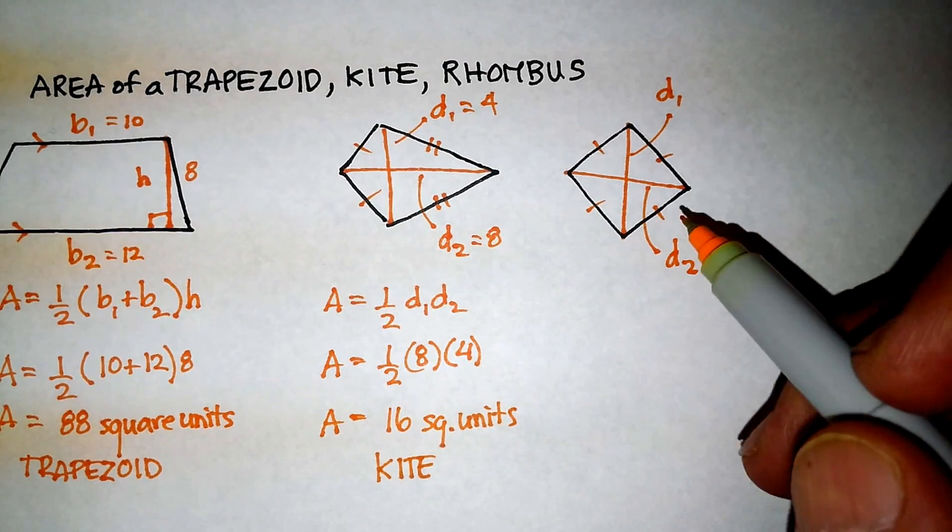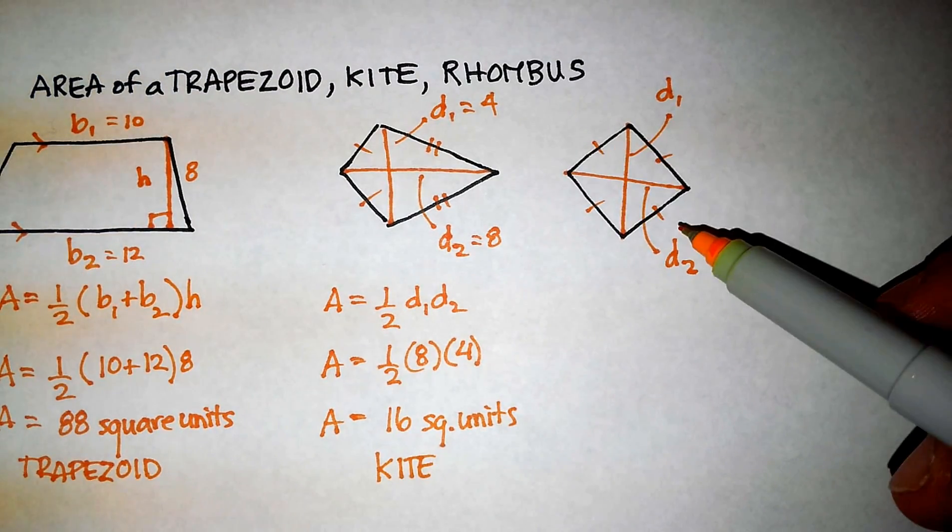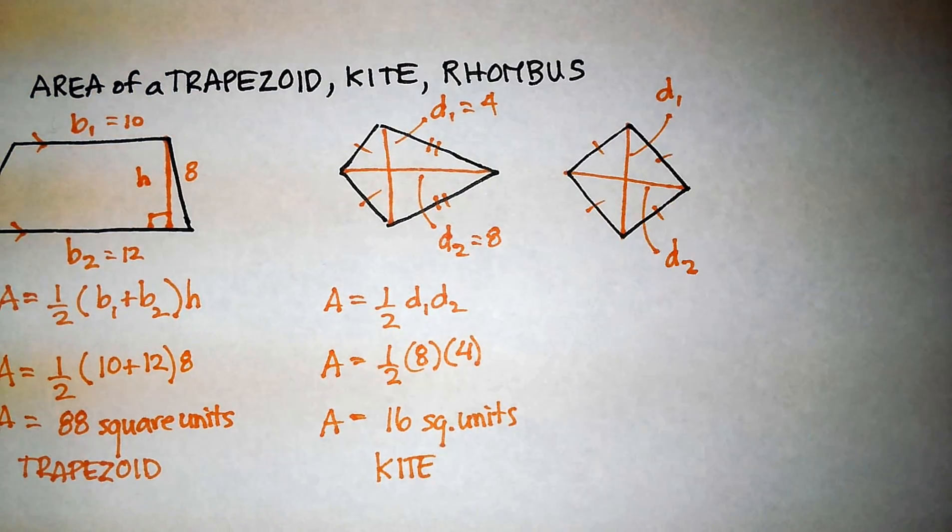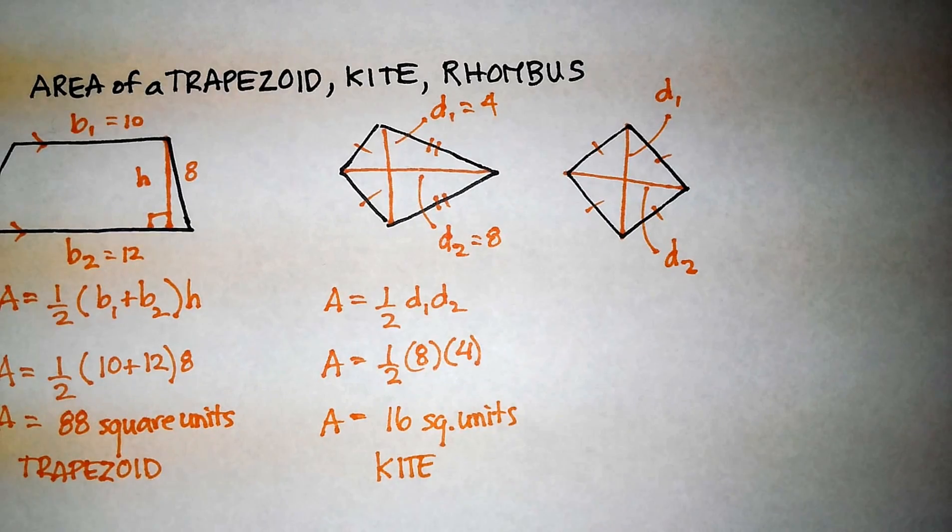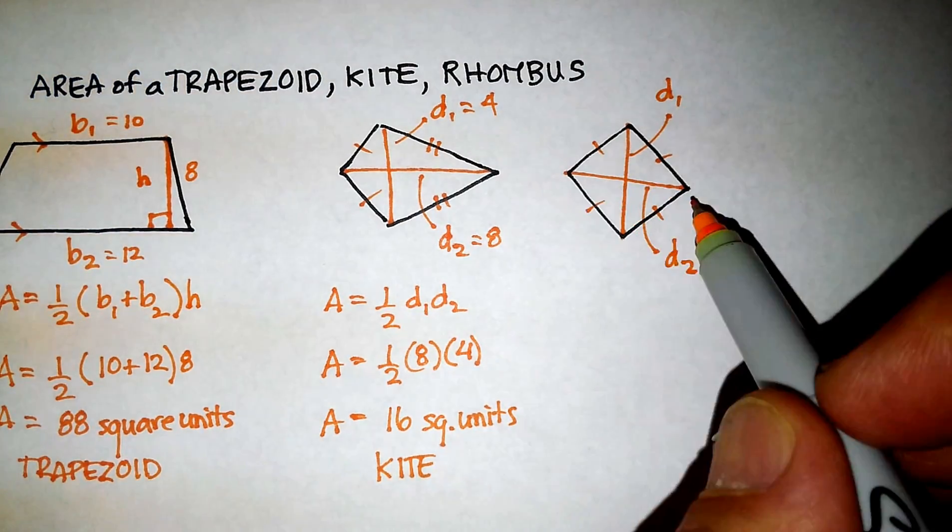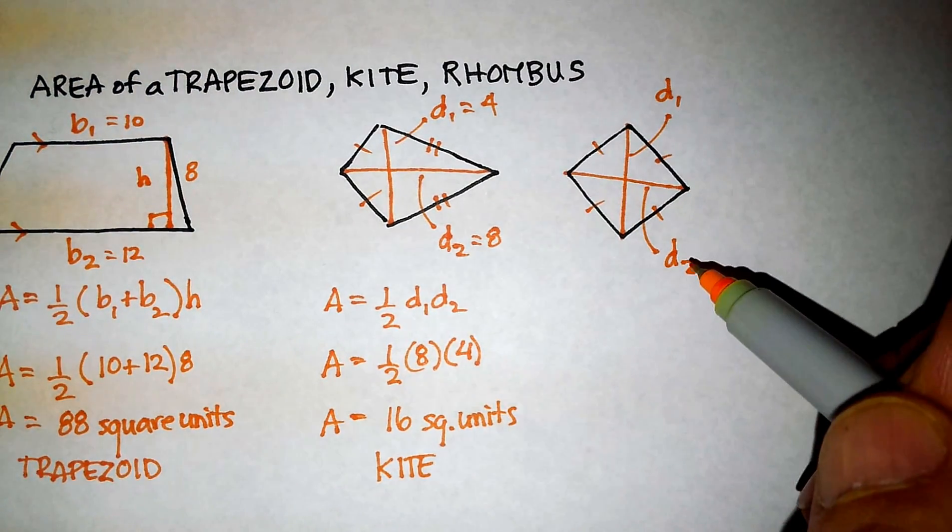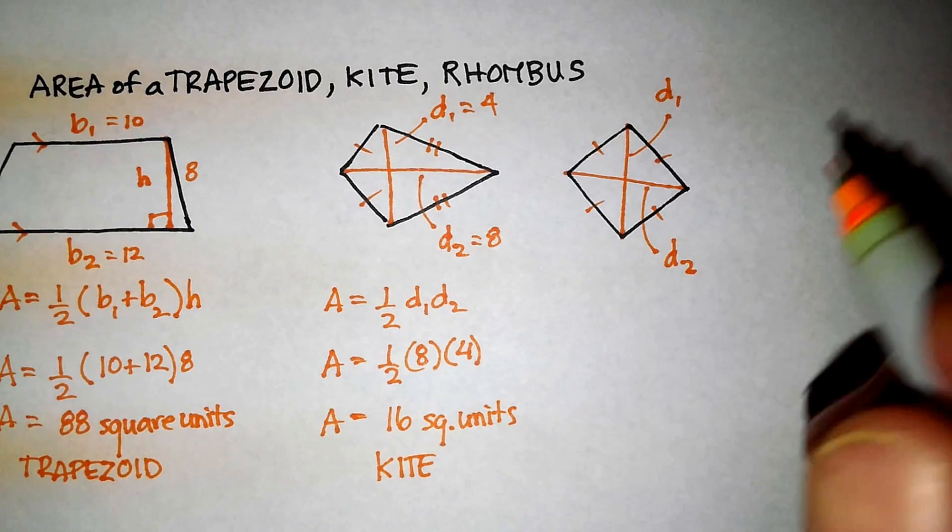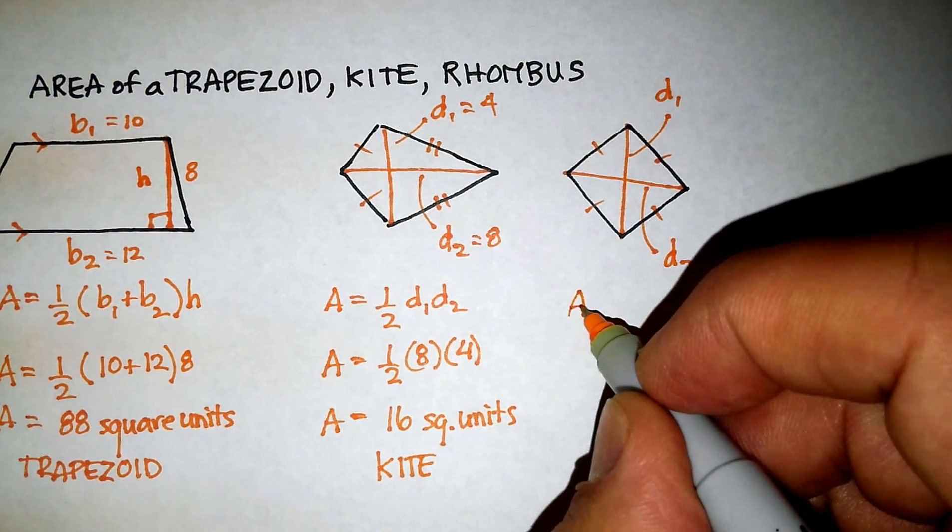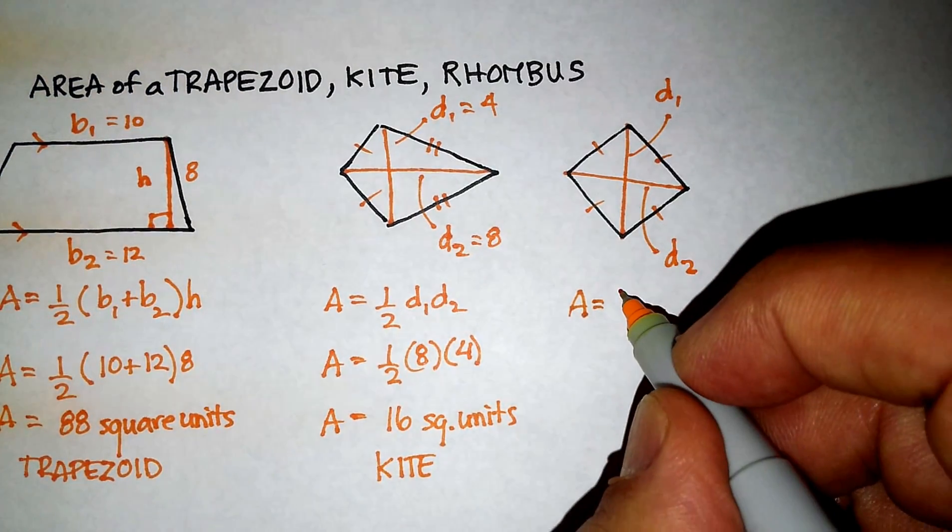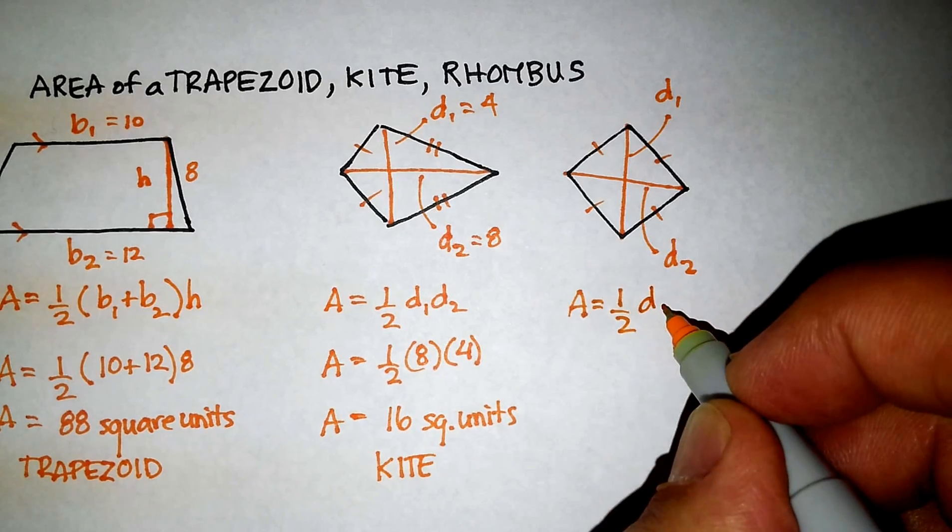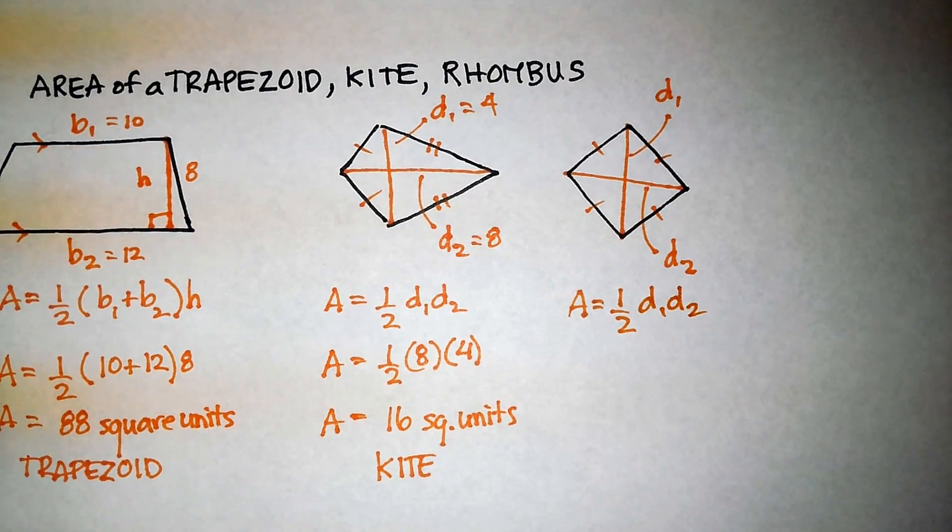This is called a rhombus. And remember that a rhombus has 4 congruent sides. And those diagonals also are called d1 and d2. And here's the bonus. The area of a rhombus is also equal to 1 half 1 diagonal times the other diagonal.